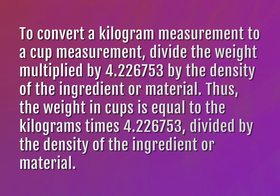To convert a kilogram measurement to a cup measurement, divide the weight multiplied by 4.226753 by the density of the ingredient or material. Thus, the weight in cups is equal to the kilograms times 4.226753 divided by the density of the ingredient or material.